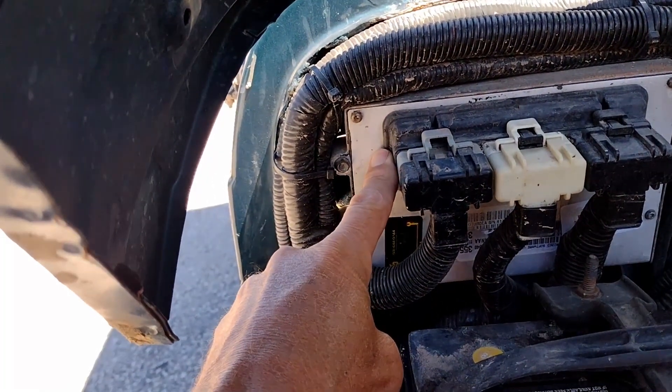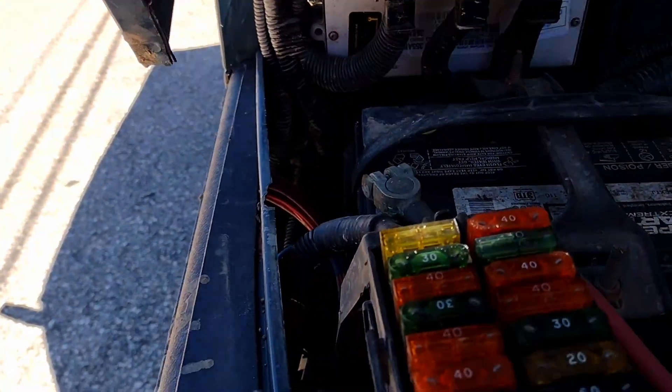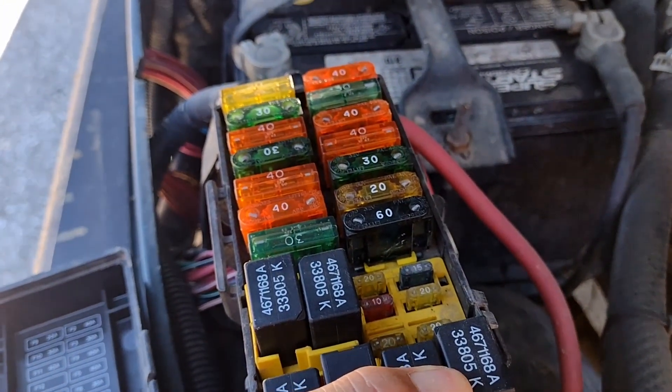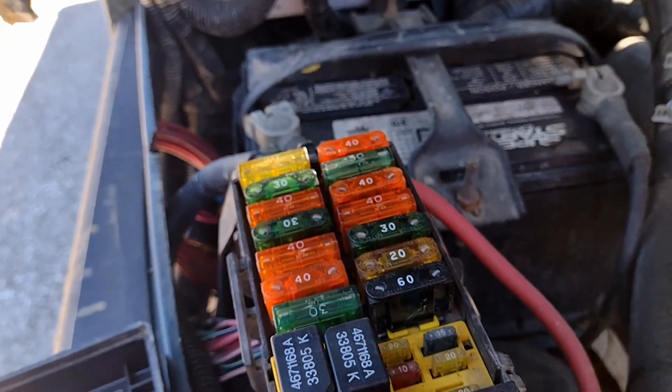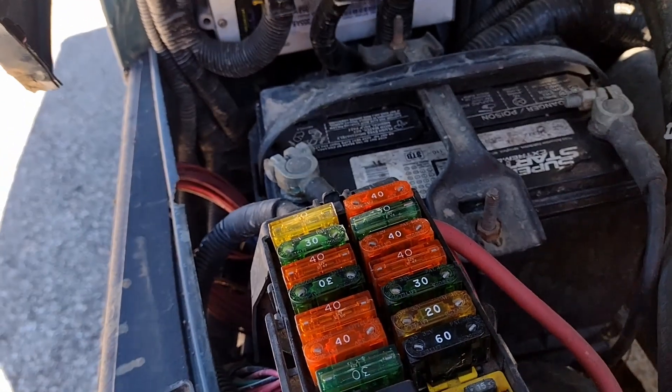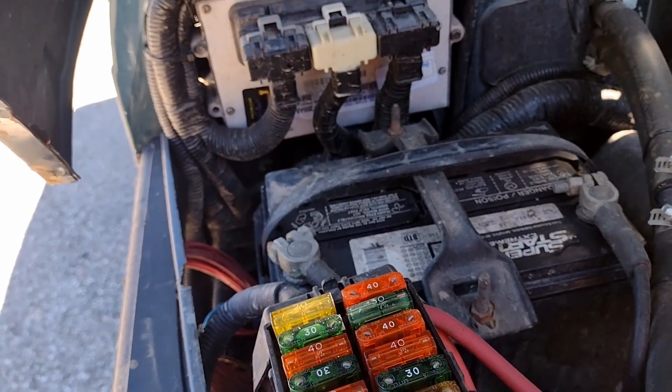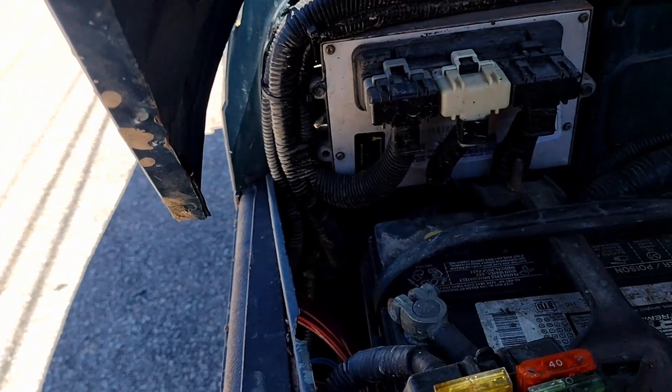Your PCM is going to supply the negative to the coil on this automatic shutdown relay. Your 86 terminal is going to have battery positive. Your 85 terminal is going to run back to the PCM. You don't need to mess with that. Those are already there.